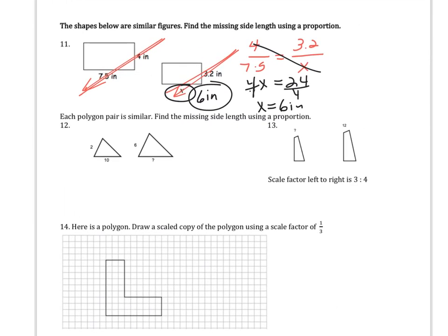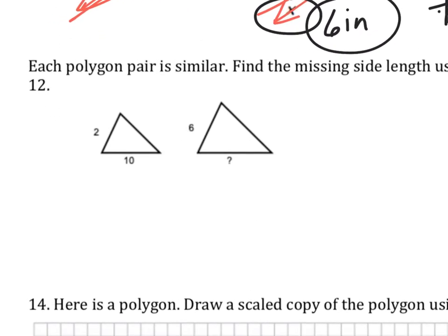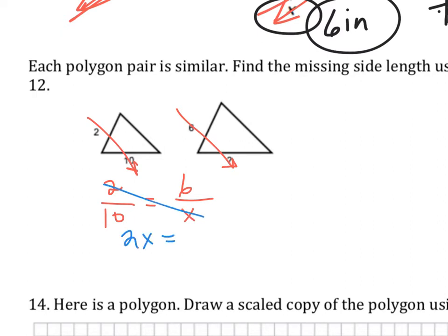Each polygon pair is similar — find the missing length using a proportion. Set up: 2 over 10 equals 6 over x. Cross-multiply: 2x equals 60. Divide by 2: x equals 30. There's no unit so I can just leave it as 30.